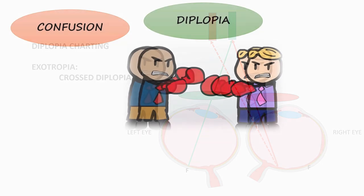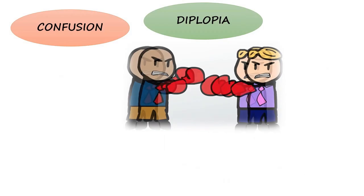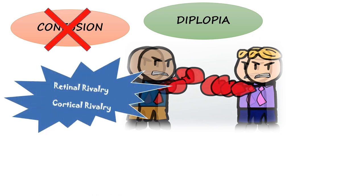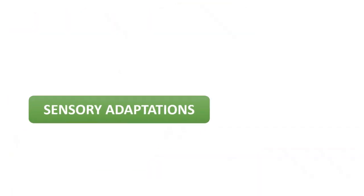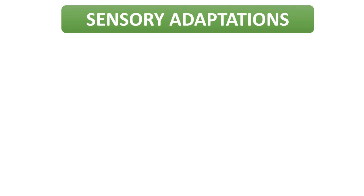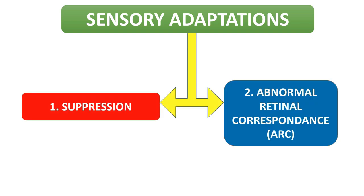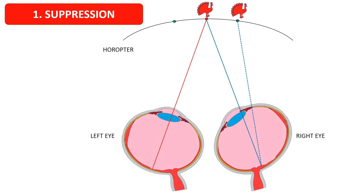The last topic in this basics series is the adaptations to strabismus. The anomalous states resulting from squint — diplopia and confusion — need corrective adaptations. We have already seen one form of adaptation: cortical rivalry, which is very strong and helps eliminate confusion. Now only diplopia needs to be addressed, for which there are two broad groups of adaptations: sensory adaptations and motor adaptations. Most forms of concomitant squints develop in childhood during the period of visual and neurophysiological development, so certain sensory mechanisms are possible to tackle diplopia. These sensory adaptations include suppression and abnormal retinal correspondence.